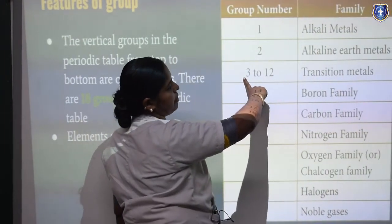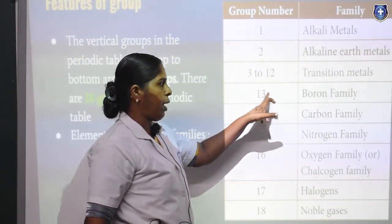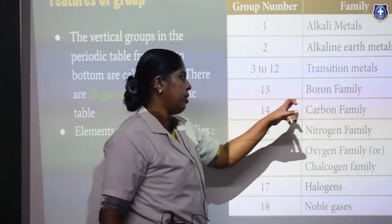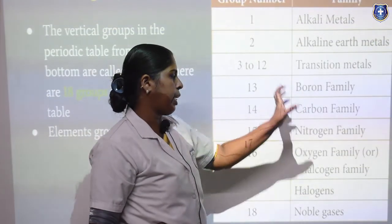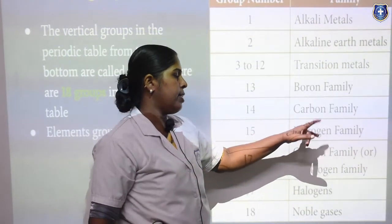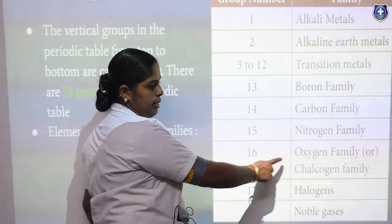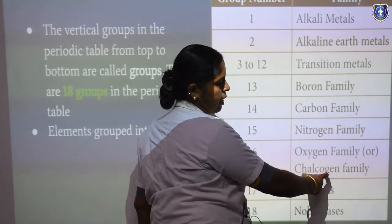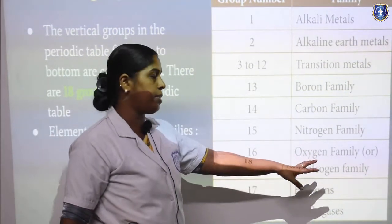The alkali metals are placed at the left side of the periodic table. The 13th group elements — boron and following elements — are known as the boron family. The 14th group, where carbon is the first element, is the carbon family. Group 15, whose first member is nitrogen, is the nitrogen family. The 16th group — oxygen and following elements — is the oxygen family, otherwise known as the chalcogen family. Chalcogens are ore-forming elements, so they are known as the chalcogen family.